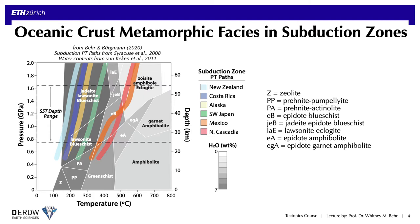For this mini-lecture, we're going to look in a bit more detail at subduction zone metamorphism, and specifically metamorphism of the 5 to 10 kilometer thickness of oceanic crust that occupies the top of the subducting slab and the interface itself. What I'm showing here now is a more detailed metamorphic facies diagram specifically for rocks of mid-ocean ridge basalt initial composition, so more basalts.